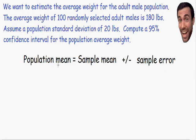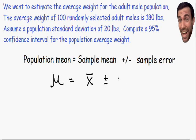Let me write this formula using math symbols. The population mean is usually written with the Greek letter mu. This is equal to the sample mean, which is written as X-bar — just X with a bar on top — plus or minus the sampling error. The sampling error is written as the Z value multiplied by the standard deviation, all divided by the square root of the sample size N.